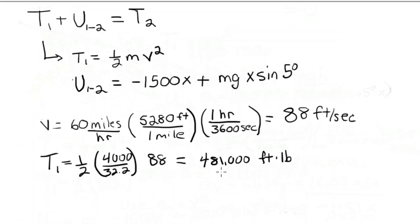Wait, I made an error here. Do you see that? What did I do? Well, here's the equation. T1 equals a half mv squared. What did I write? A half mv. This one has to be squared. There. Now plug that in your calculator, and you should get 481,000 foot pounds.